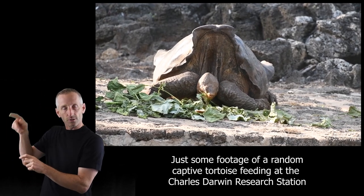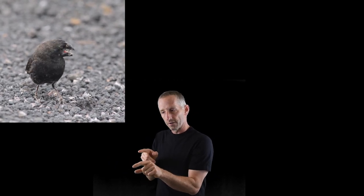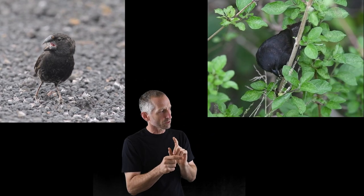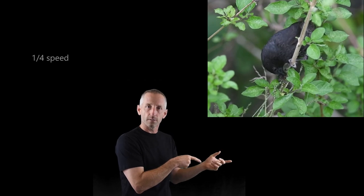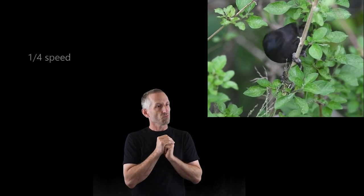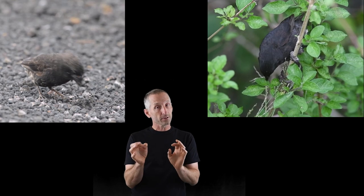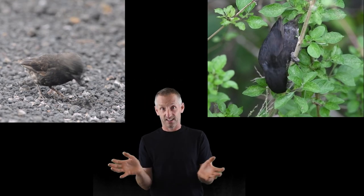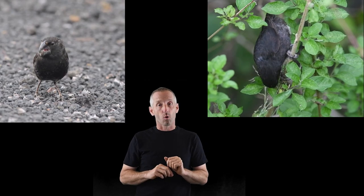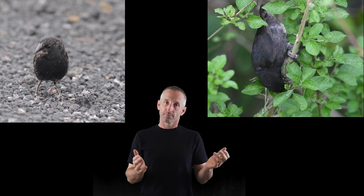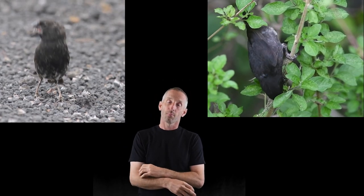Then you look at the finches: the large-beaked one is feeding on large seeds, and the small-beaked one is feeding on small seeds. The one with a woodpecker-like beak is acting like a woodpecker, and the one with a little tweezer-like beak — like a warbler — behaves like a warbler, picking insects off the bark.